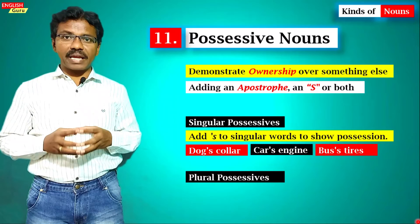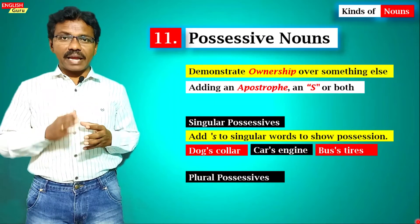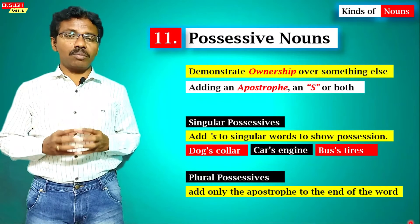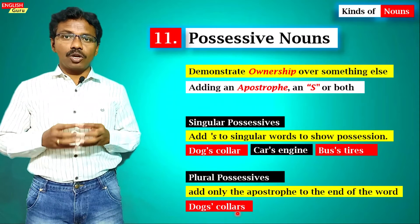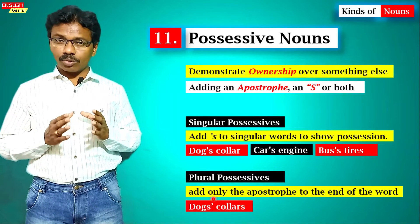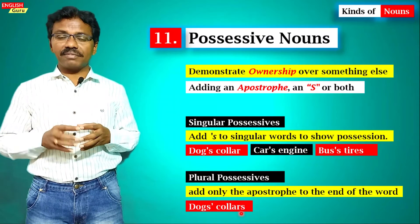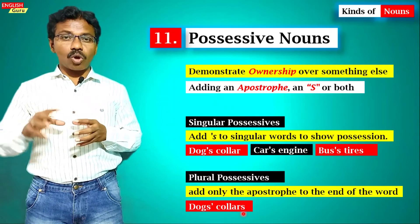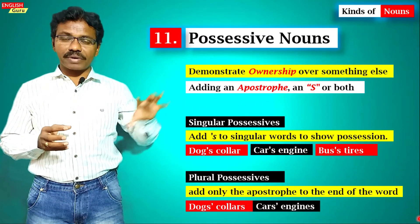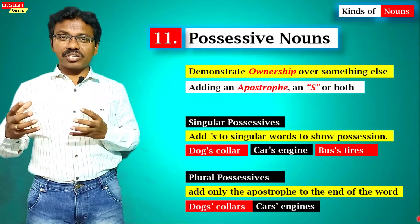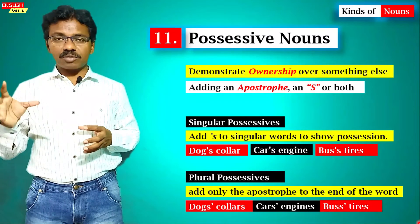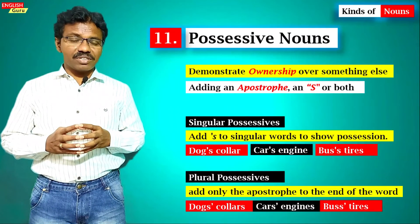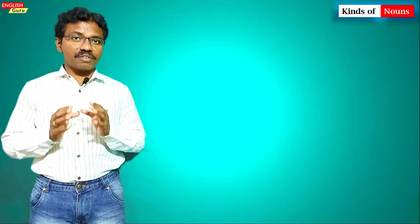Plural possessive nouns are formed by adding only an apostrophe at the end of a plural noun — after the existing 's.' For example, 'dogs'' (dogs apostrophe) followed by 'collars' means all those collars belong to those particular dogs. 'Cars' engines' means those engines belong to those cars. 'Buses' tires' means those tires belong to those buses. Possessive nouns indicate ownership or belonging of a particular noun.